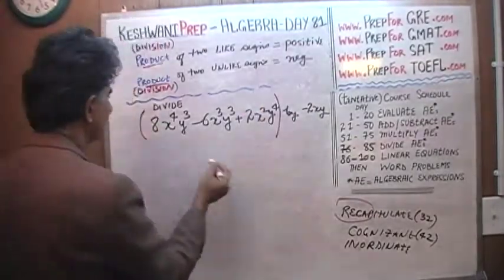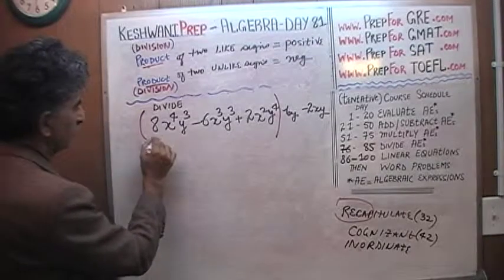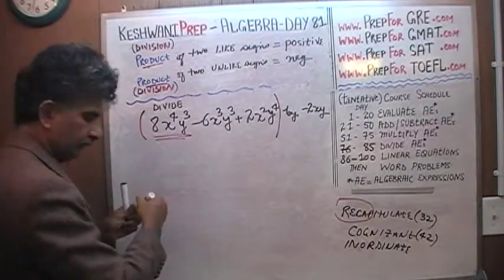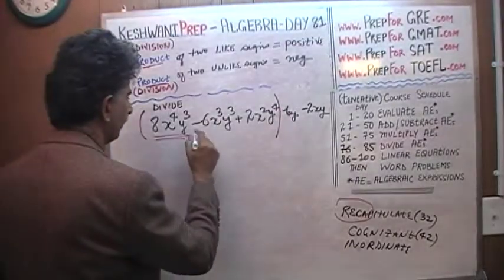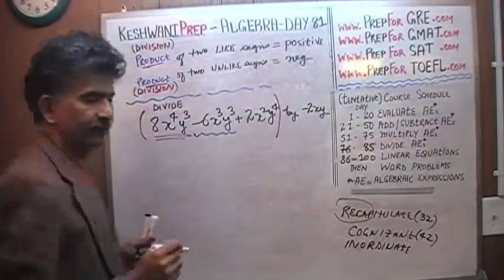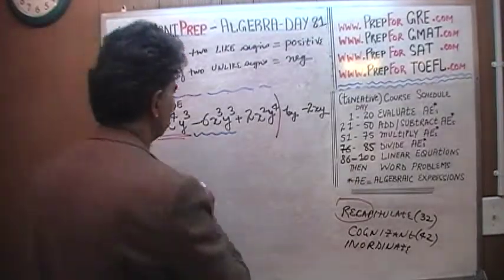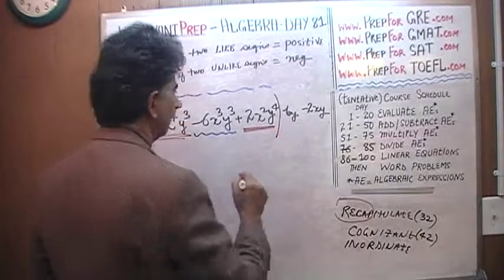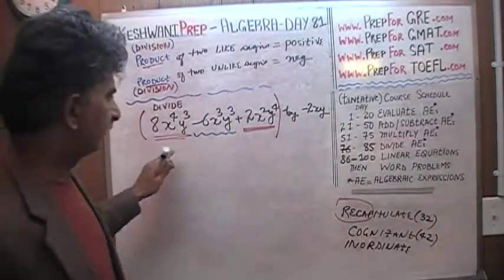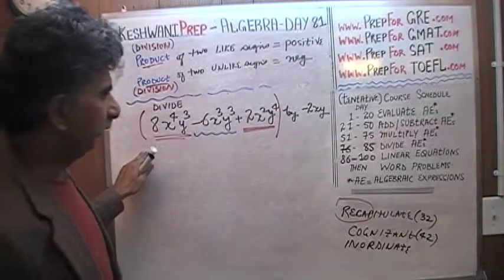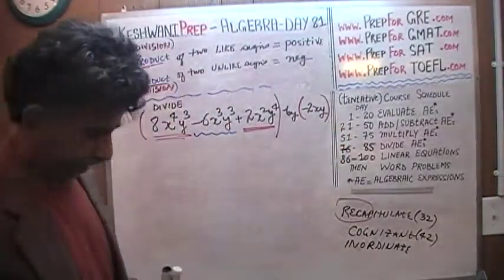This expression has three terms. The first term is 8x raised to the 4th, y cubed. The second term is negative 6x cubed y cubed. The third term is 2x squared y raised to the 4th. We are asked to divide this algebraic expression by an expression which contains only one term. So let's do it.